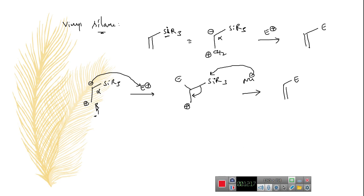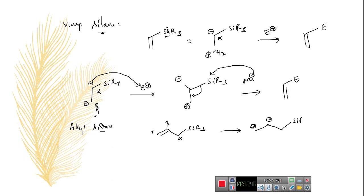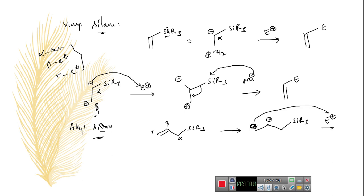If you consider allyl silane, there are alpha, beta, and gamma carbons. The alpha-carbon does not bear a carbanion here, but the beta-carbon can get a positive charge and the gamma-carbon gets a negative charge. So indirectly, this silane compound not only forms alpha-carbanion stability but can also stabilize gamma-carbanion. Alpha-carbanion, beta-carbocation, and gamma-carbanion stability are all observed in organosilanes. When you treat allyl silane with an electrophile, electrophilic substitution is again observed.